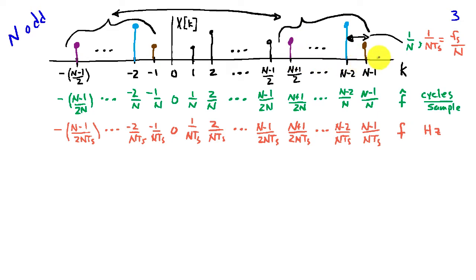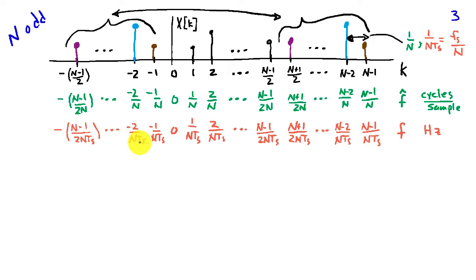Because the upper half of the DFT coefficients corresponds to the negative frequency DFT coefficients, we can map those down to negative discrete time frequencies: negative 1 over N, negative 2 over N times t-sub-s, and so on. The spacing between each DFT coefficient is 1 over N cycles per sample, or 1 over N·t-sub-s hertz, which is the same as f-sub-s divided by N.